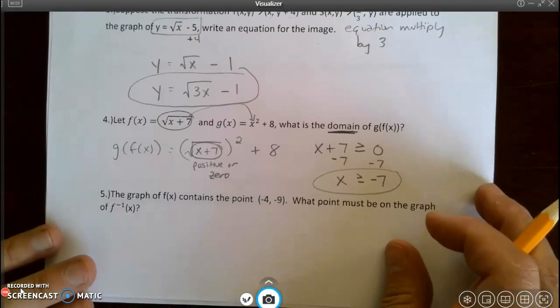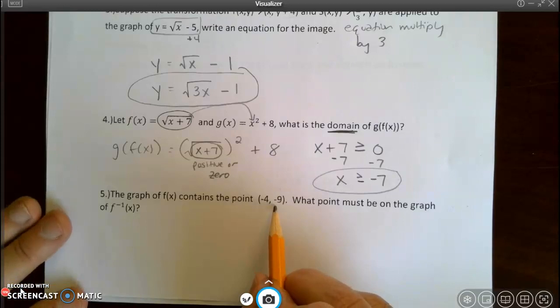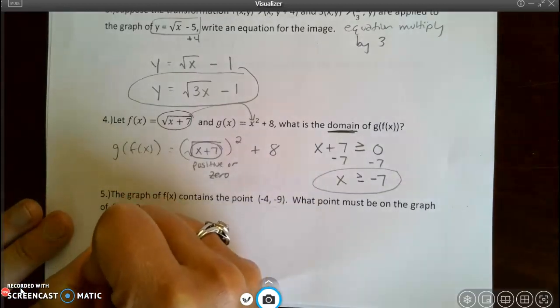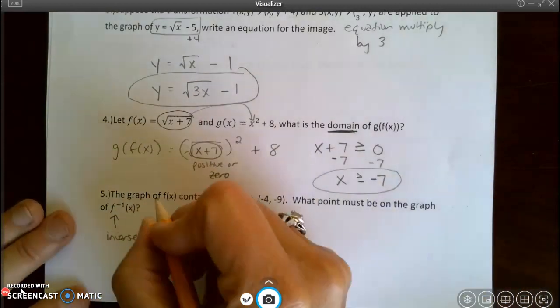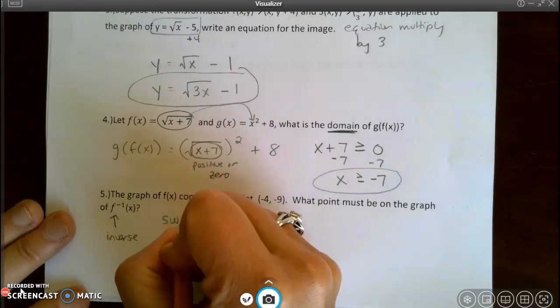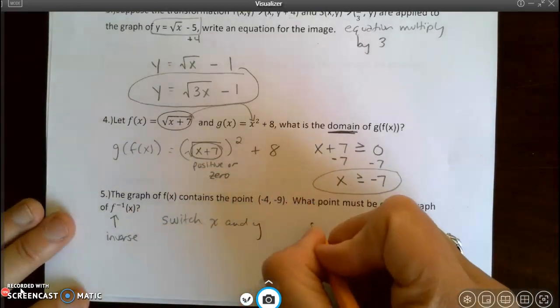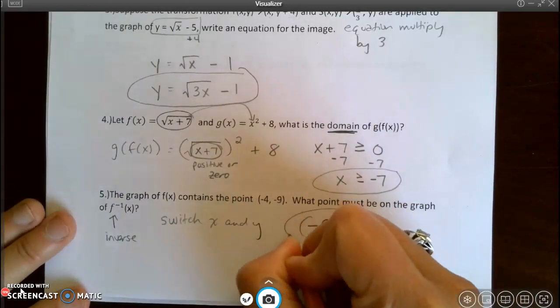Number 5. The graph of f(x) contains the point (negative 4, negative 9). What point must be on the graph of the inverse? Well, the inverse means switch x and y. So that would be (negative 9, negative 4).